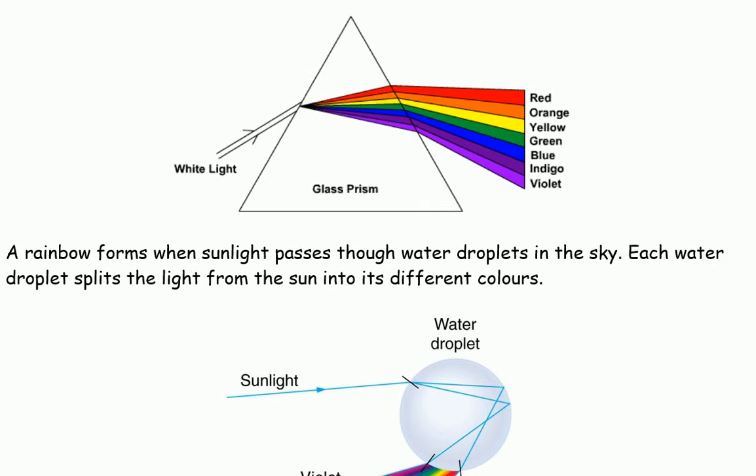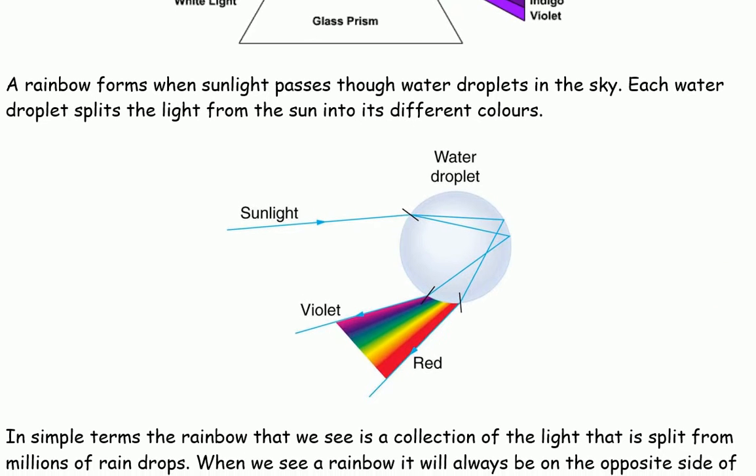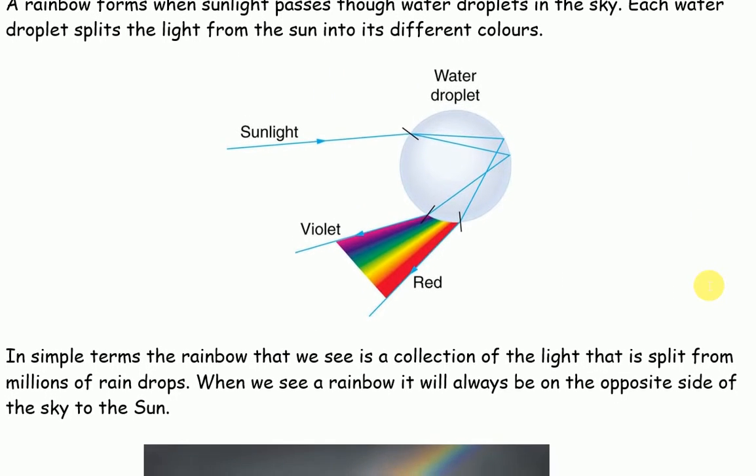A rainbow forms when sunlight passes through water droplets in the sky. Each water droplet splits the light from the sun into its different colours.